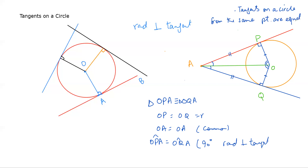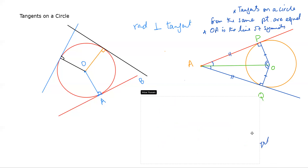What is OA doing here? OA is the line of symmetry, because everything on both sides of OA is exactly identical. This means OA bisects the angle at A and the angle at O — the line joining the center to the external point bisects both angles.